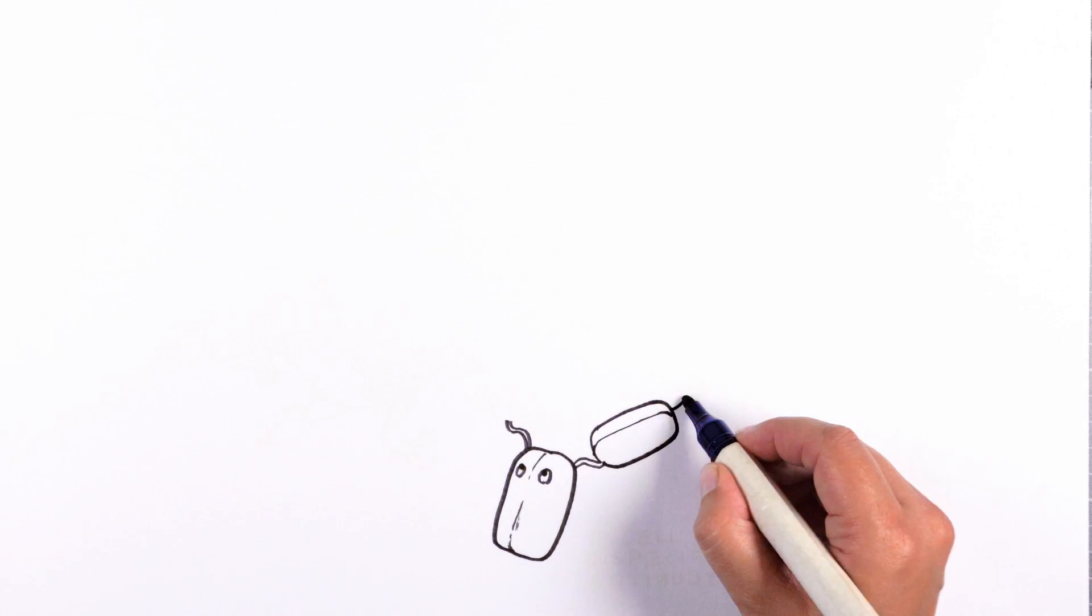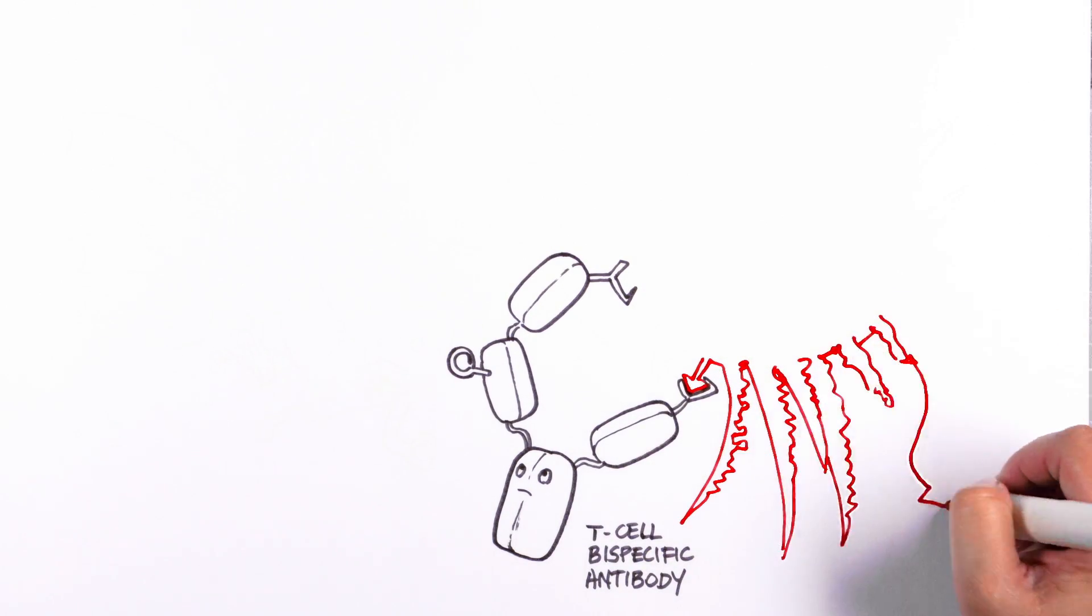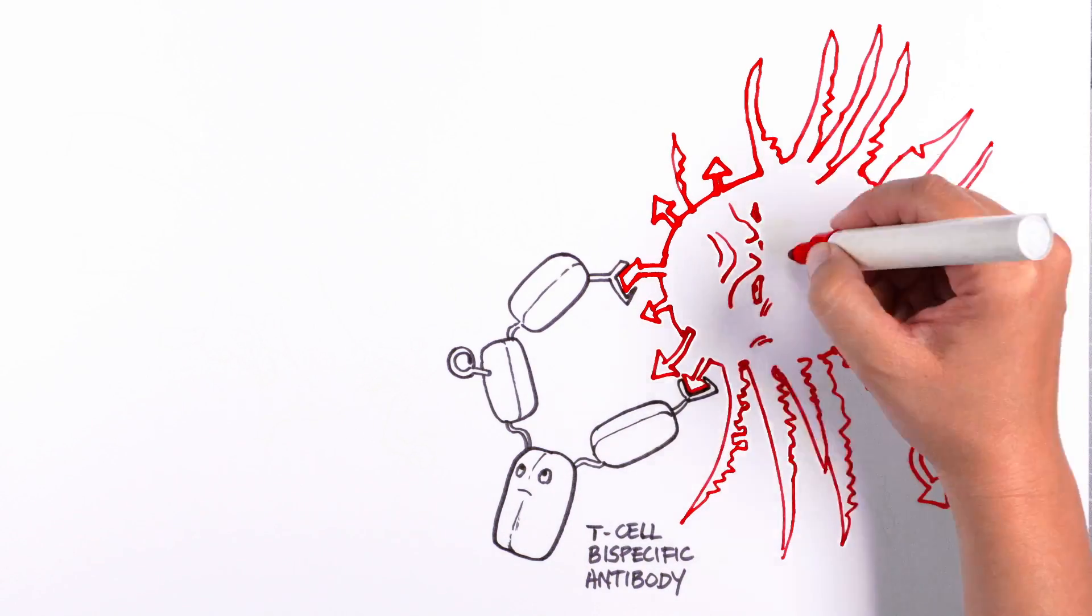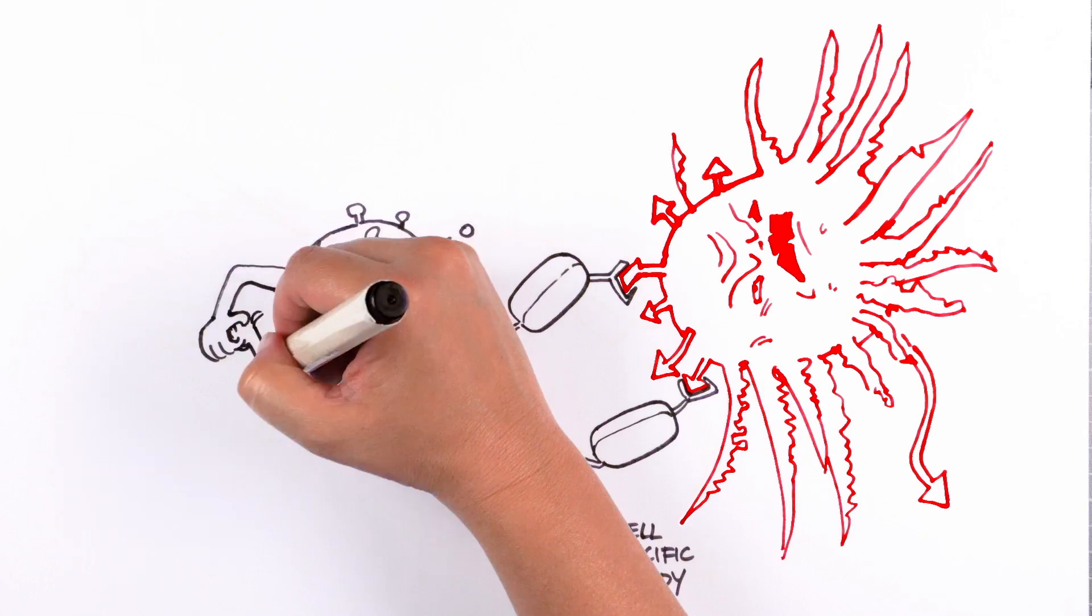T-cell bispecific antibodies are basically matchmakers between T-cells and cancer cells. The antibodies have two handles that recognize specific markers on the surface of cancer cells, and one handle that is designed to hook to T-cells, bringing them in close proximity to the cancer cells.